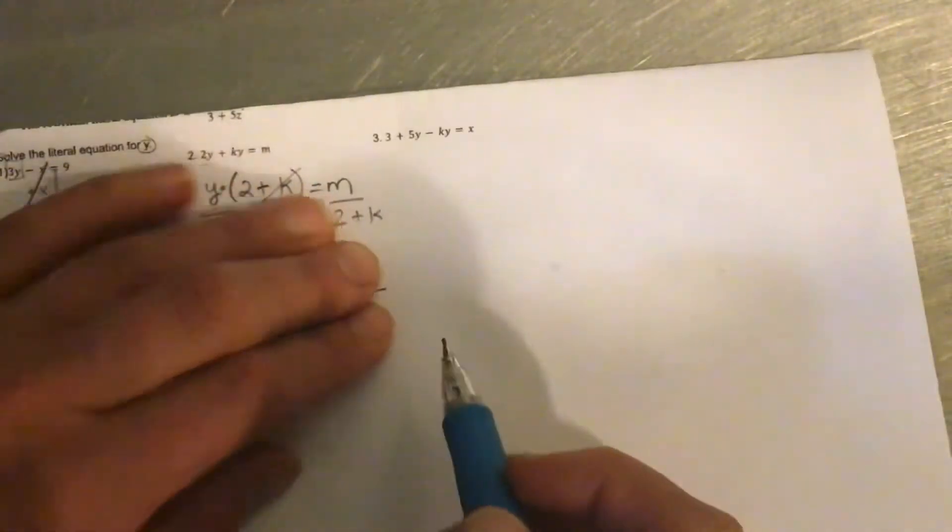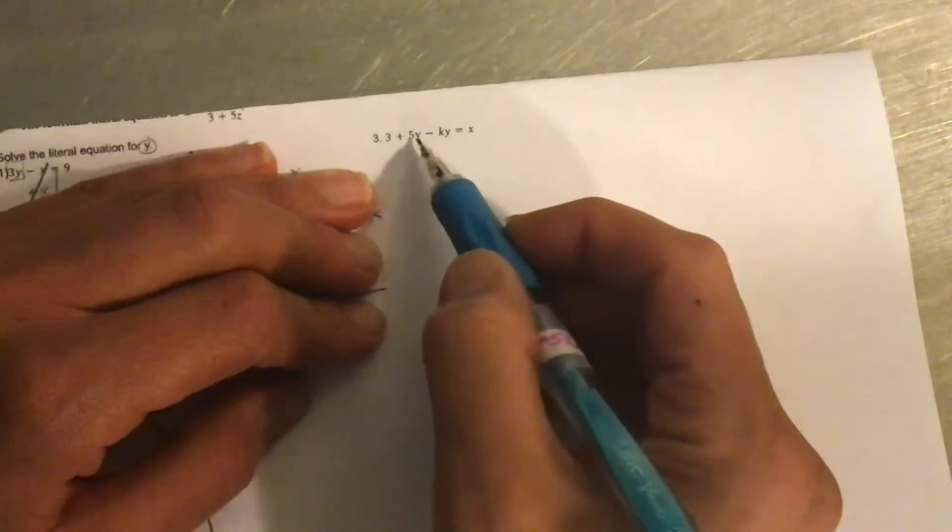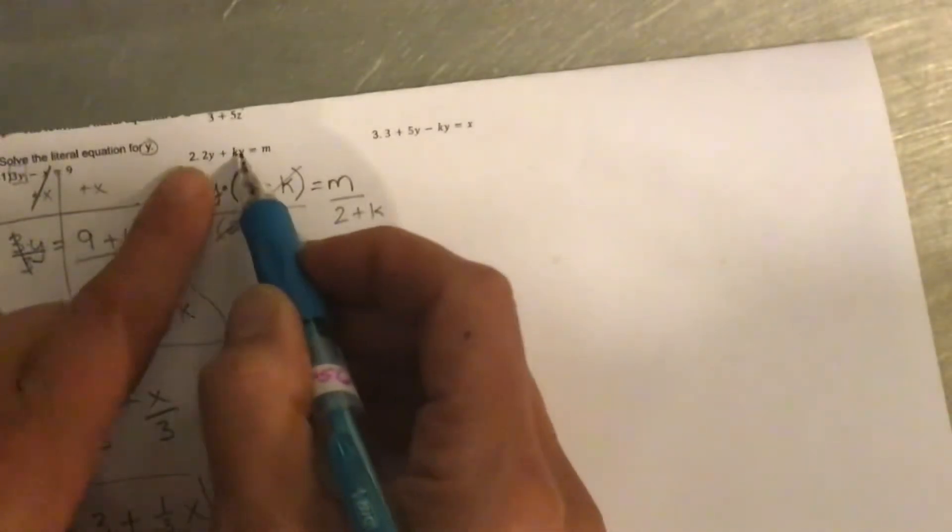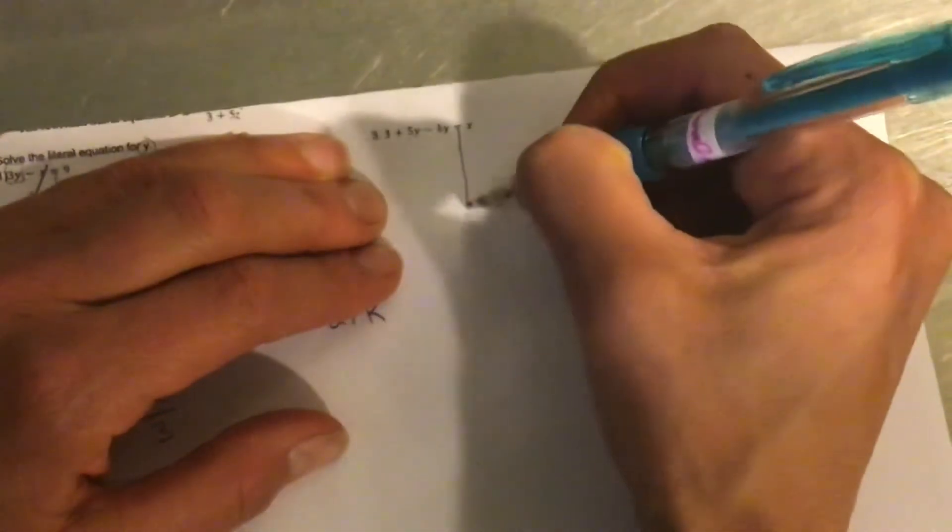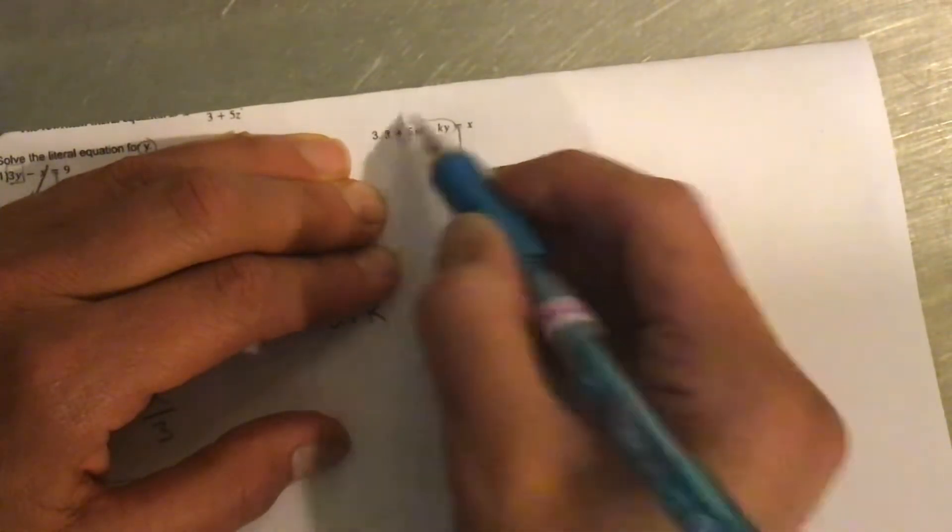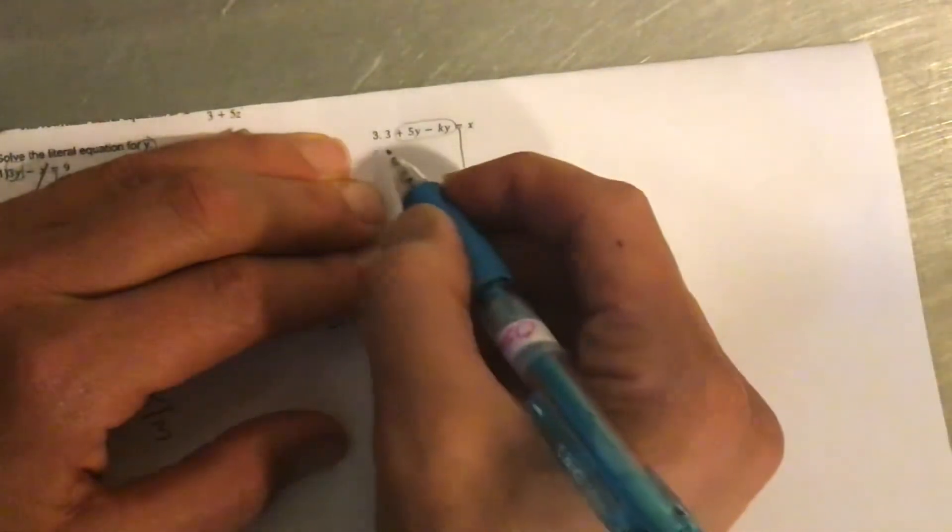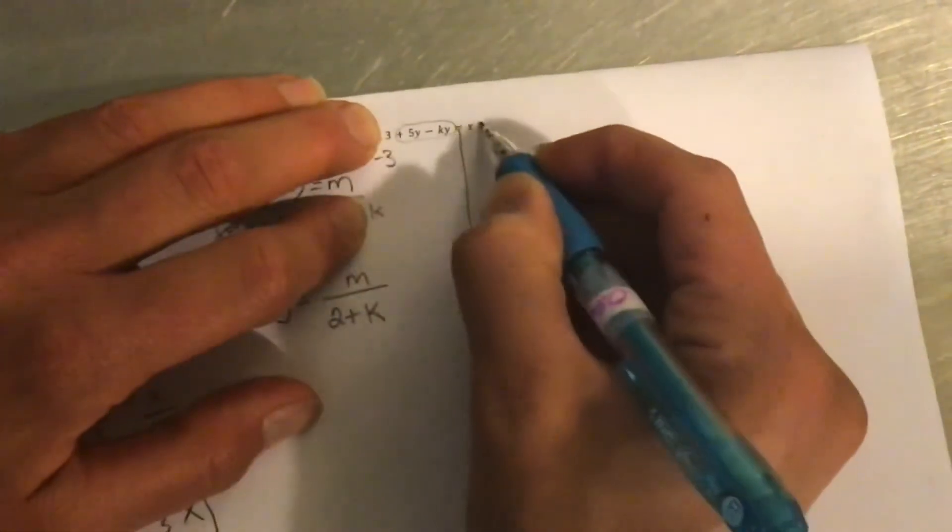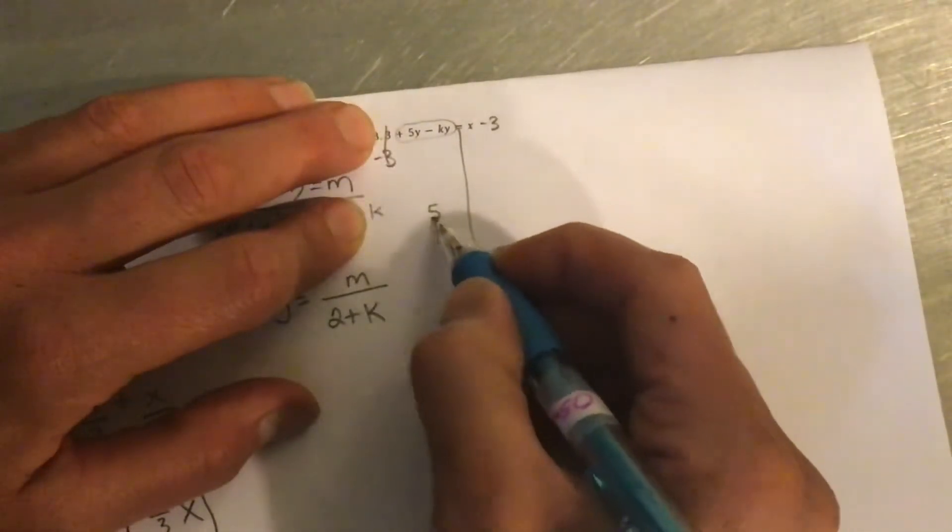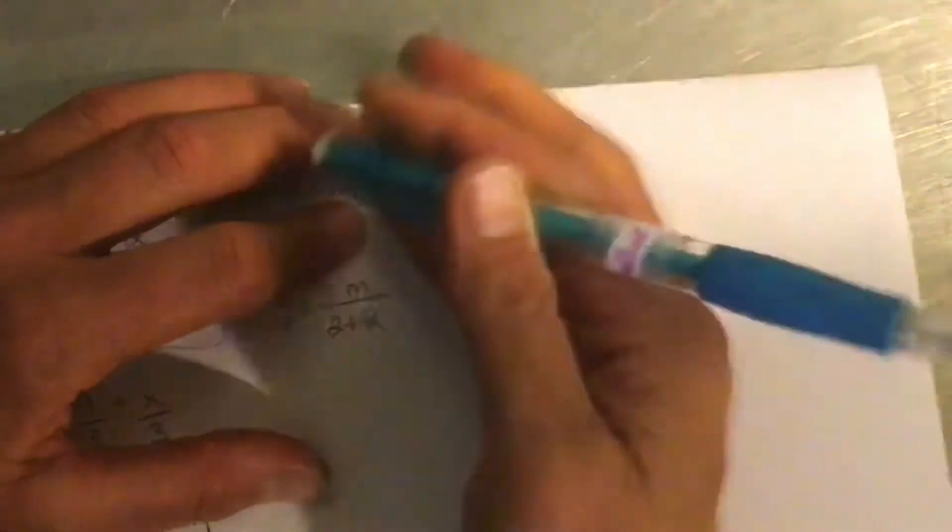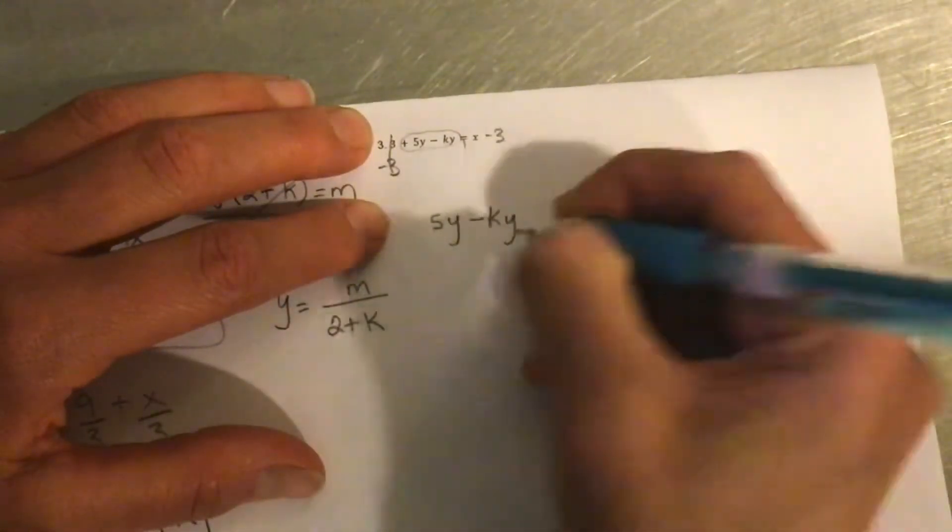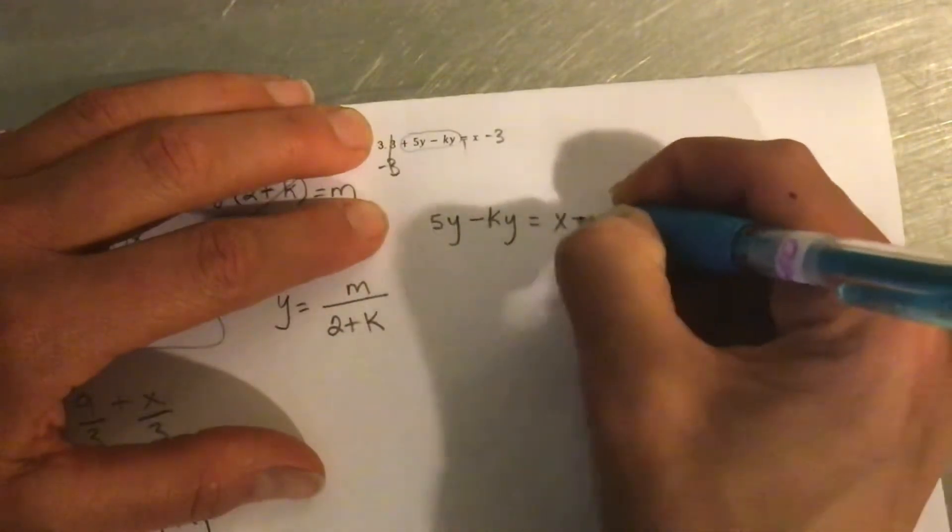All right. And over here. Again, we're solving for y. There are two terms, but they're not alone, right? Like over here, they were the only two terms. So essentially, you don't have to do this, but I'm going to single those out, right? They're not alone. So let's get rid of that 3 by subtracting 3. So 5, I do not have enough room here, so I'm going to get rid of that line. So 5y minus ky equals x minus 3.